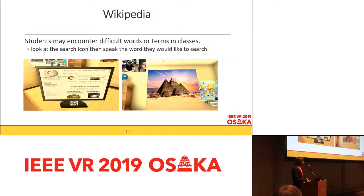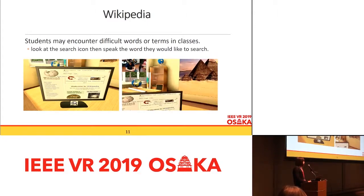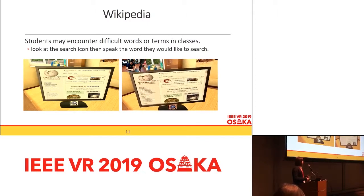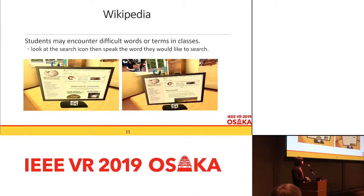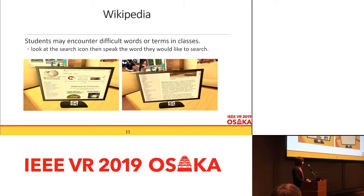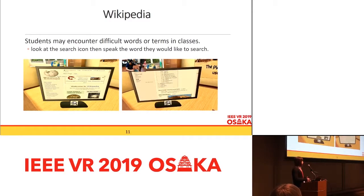Considering that students cannot easily answer questions in the VR classroom system, we let students check Wikipedia for obtaining information. They can speak the words they would like to search, and the system processes the voice command via the Google Speech API, linking the page to the word they say. They can also interact with the screen using gestures.